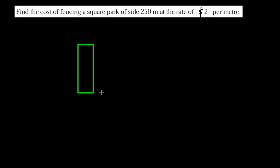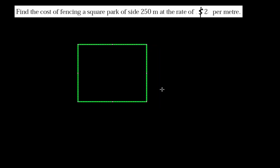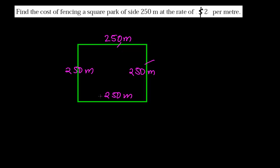Let me draw a square park. Suppose I have this square park — the side of this square park is 250 meters. So this side is 250 meters, this side is 250 meters, and this side is also 250 meters, because all sides of a square are equal.